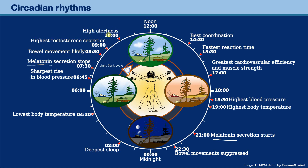High alertness occurs at around 10 AM, for example. There is also an individual personal day-night cycle — some people are much more alert late at night — and this can be shaped by habits and daily routines that overlap with the biological rhythm. So hormones have a strong influence, but daily habits also play a significant role.